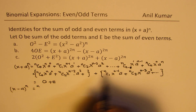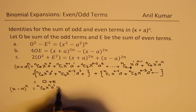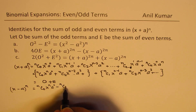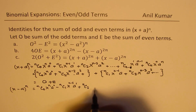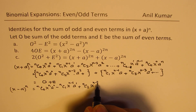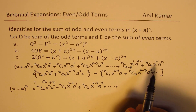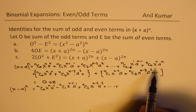For (x - a)^n, we write: nc0·x^n·a^0 minus nc1·x^(n-1)·a^1 plus nc2·x^(n-2)·a² and so on. We include (-1)^n in the general term to be precise, since we don't know whether n is even or odd.